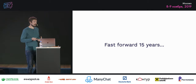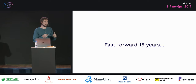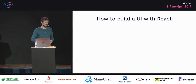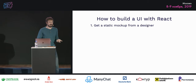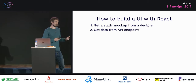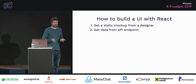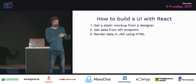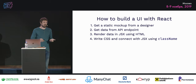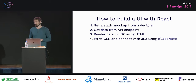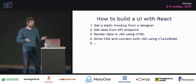Fast forward 15 years and React first appeared — this idea of components, with everything rendered in JavaScript during runtime. This is how we were building user interfaces with React: get a static mockup from a designer, get data from API endpoints. Back-end developers now work on API endpoints. We would render data using JSX producing HTML tags, still writing CSS connected with a different attribute name called className in React.